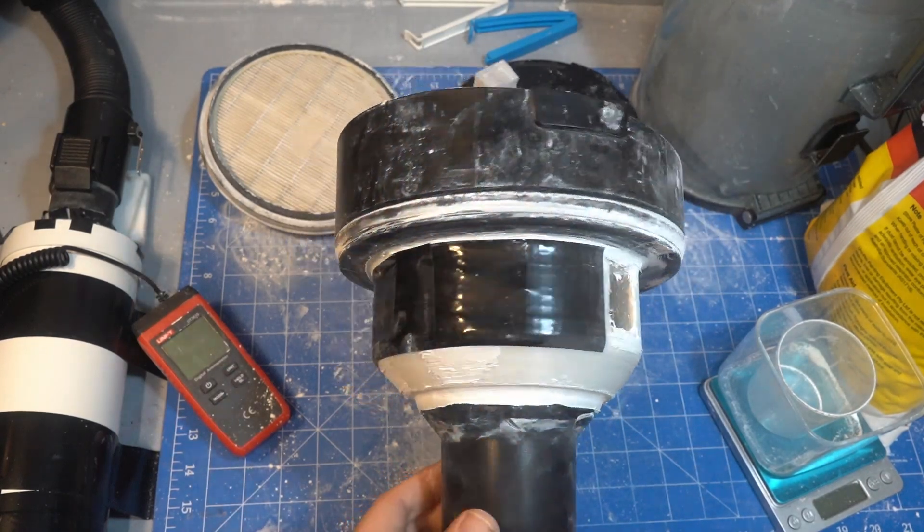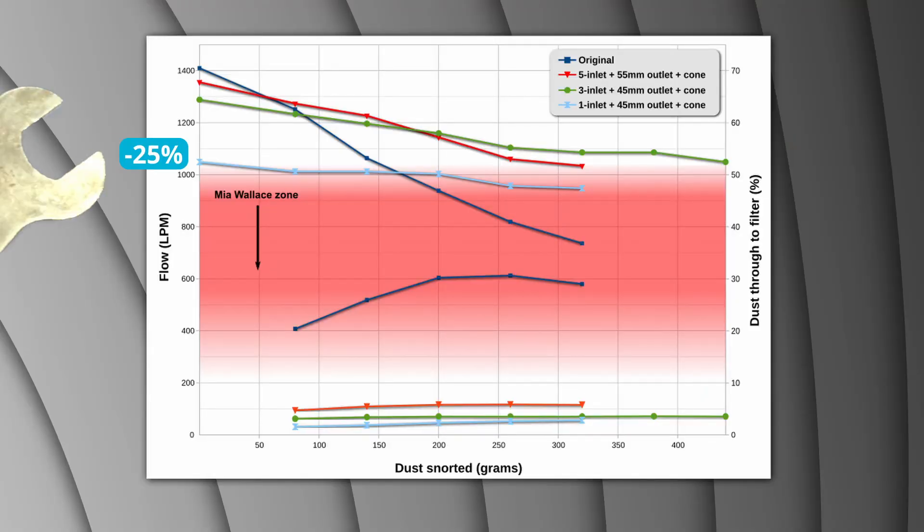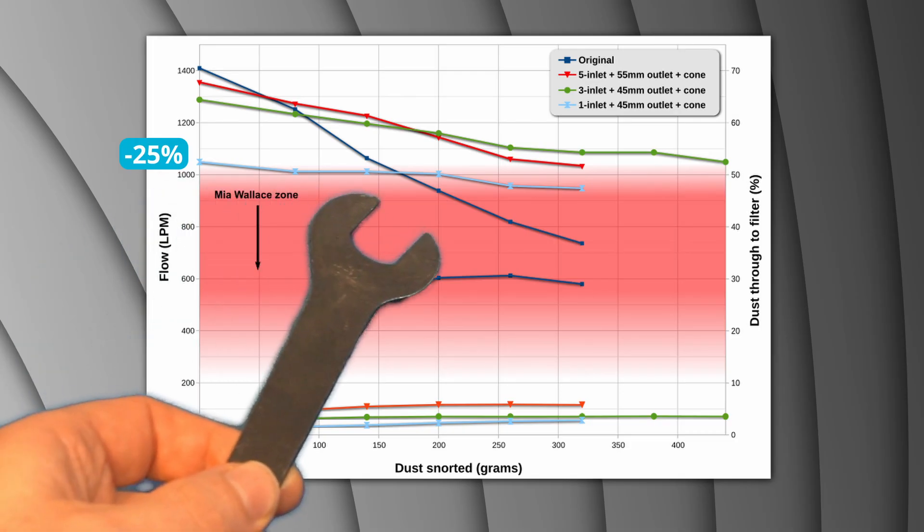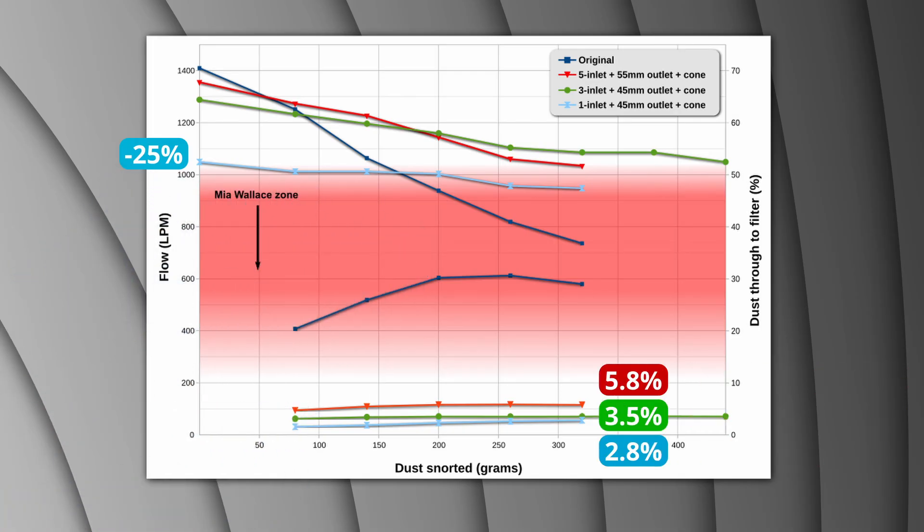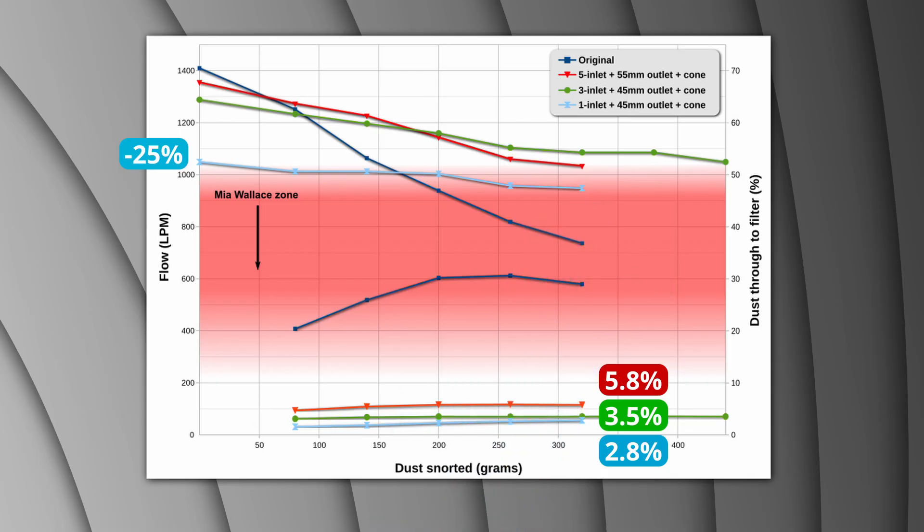I tried again with just a single inlet, but this made the flow rate take a big hit. 25% lower than the original vac and close to the point where the vacuum struggles to suck dust up, but it did improve the filtration with only 2.8% of dust making it to the filter. The flow graph was flatter than any other mods, but the flow rate is so low that it's just not worth using.